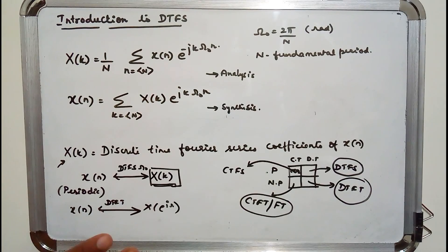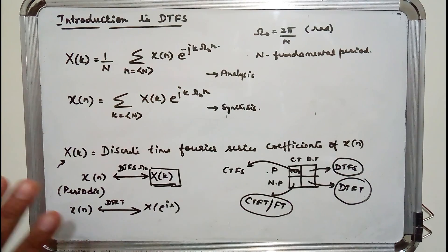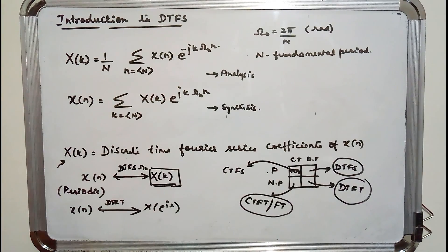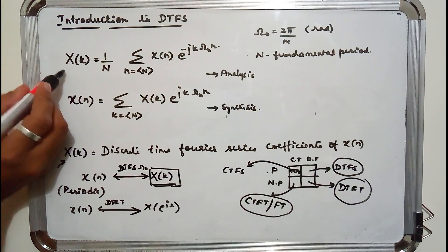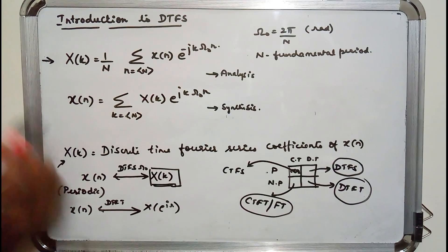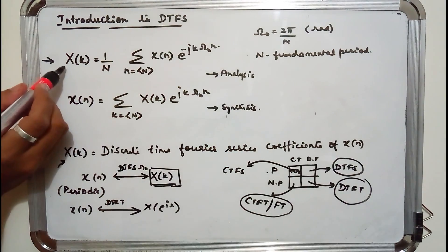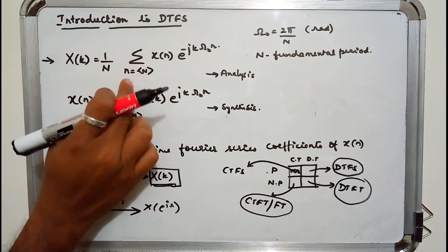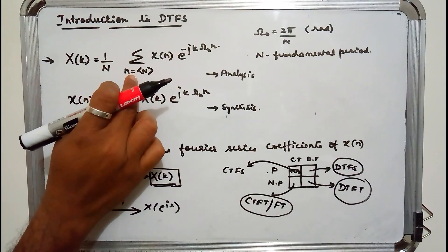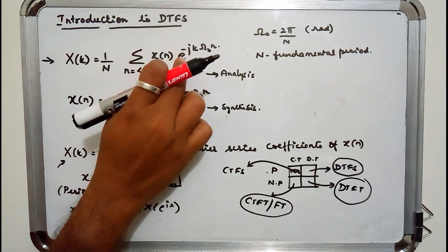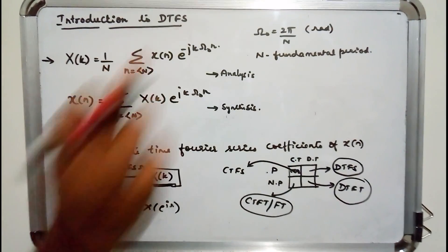As in transforms, in series we have two major equations: the analysis equation and the synthesis equation. The analysis equation gives you the Fourier series coefficient. x of k is given by 1 over N, summation over one period of x of n times e power minus j k omega-naught n.